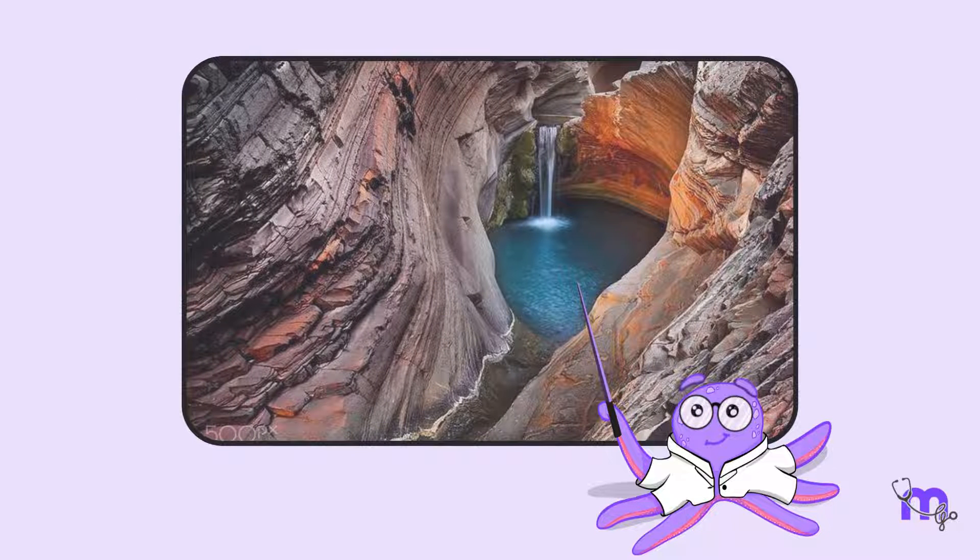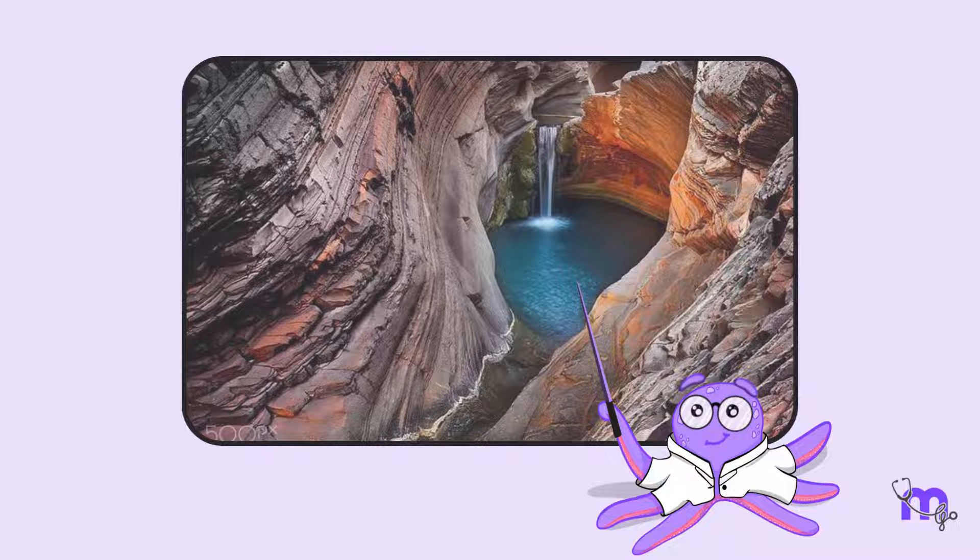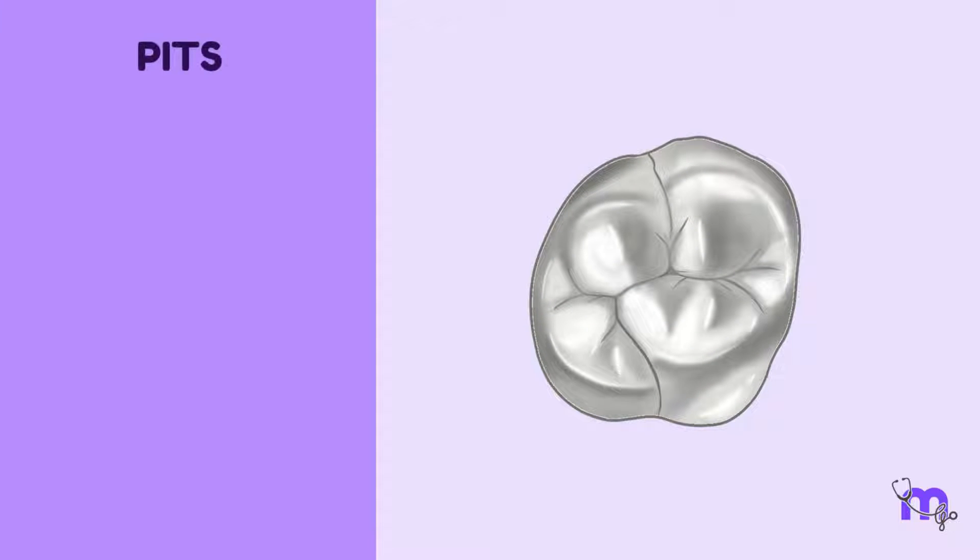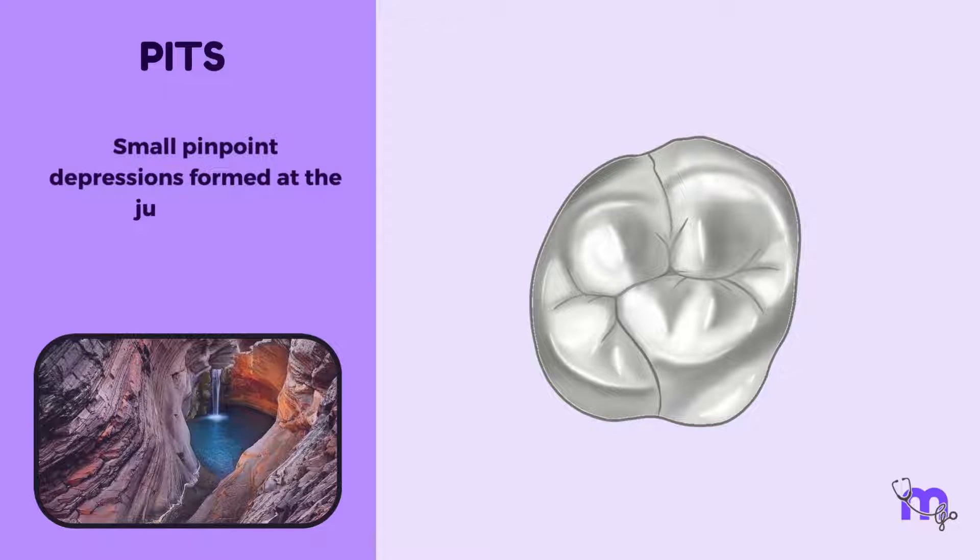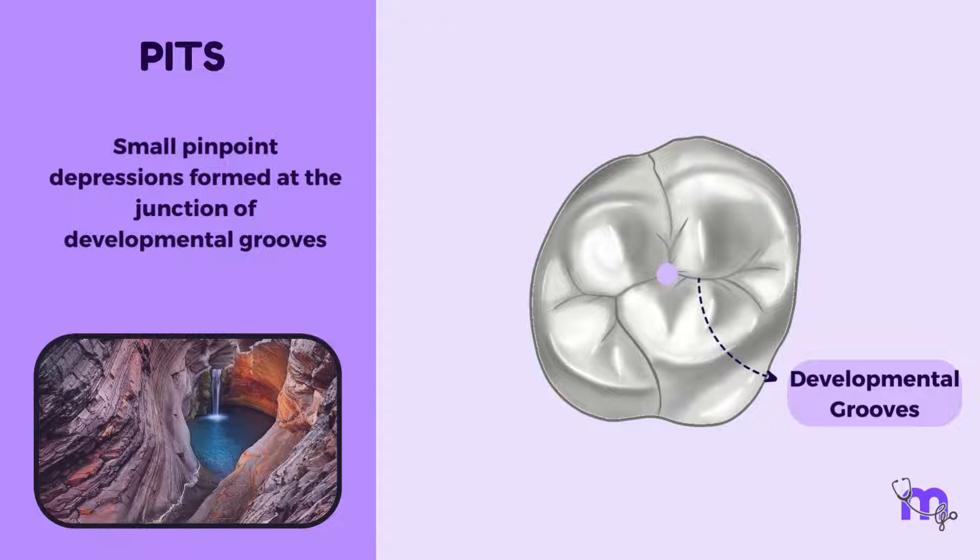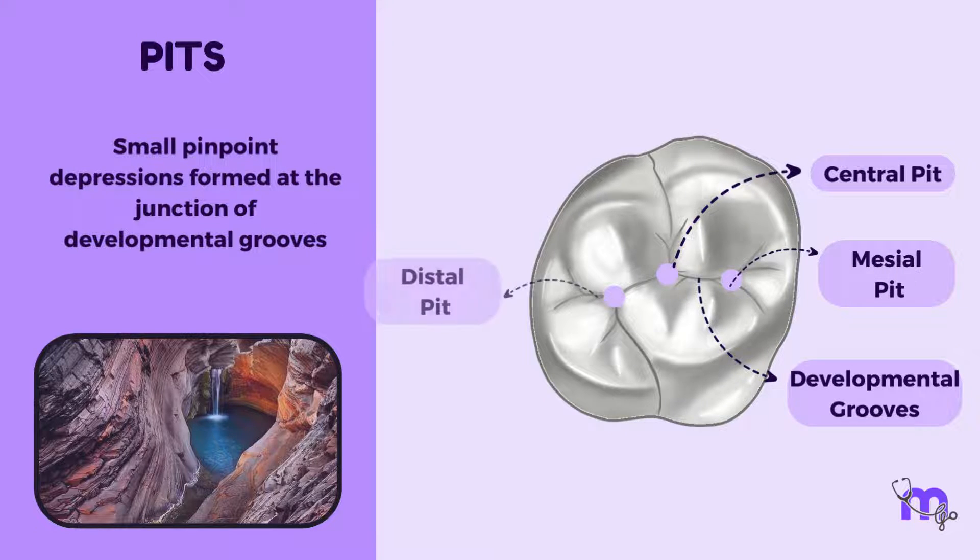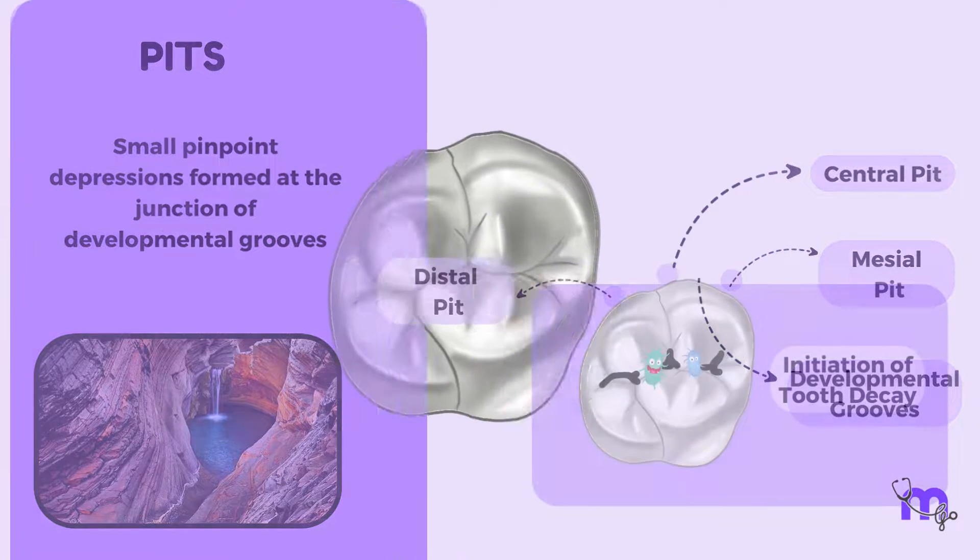Next, consider a hidden oasis nestled within the embrace of towering mountains, an oasis that holds life and stories in its confines. In dental anatomy, pits are like these oasis. They are small pinpoint depressions formed at the junction of developmental grooves. They are formed at the center, known as the central pit, and also formed in the mesial and distal fossa, referred to as the mesial and distal pits.